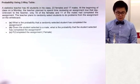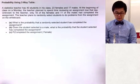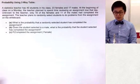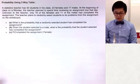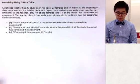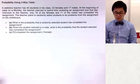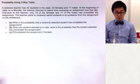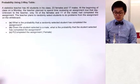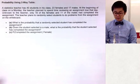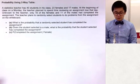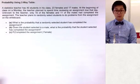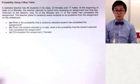In this probability question, a statistics teacher has 40 students in his class — 23 females and 17 males. At the beginning of class on a Monday, the teacher planned to spend time reviewing an assignment due that day. Unknown to the teacher, only 19 of the females and 11 of the males had completed the assignment. The teacher plans to randomly select students to do a problem from the assignment on the whiteboard, and we're going to be answering problems A, B, and C using a two-way table.